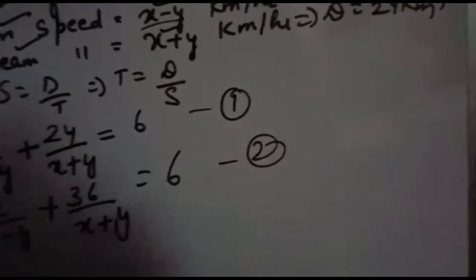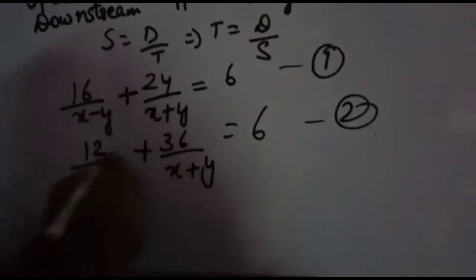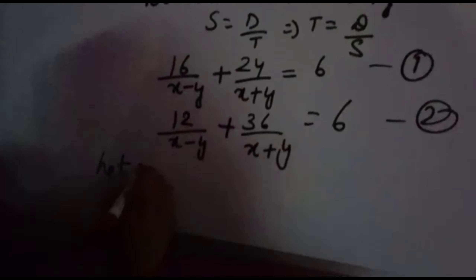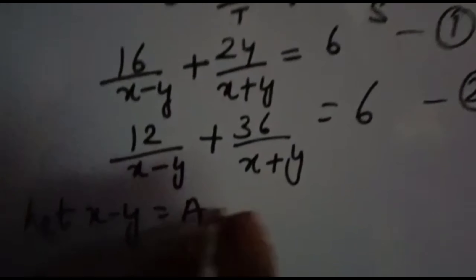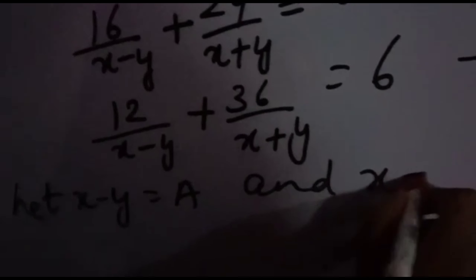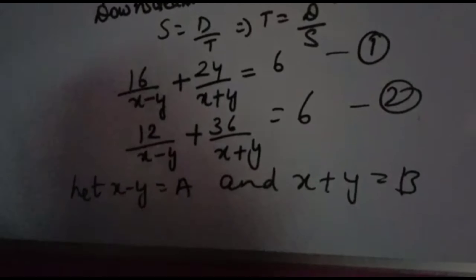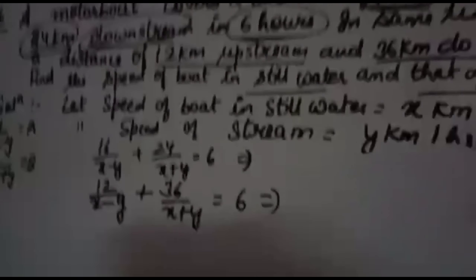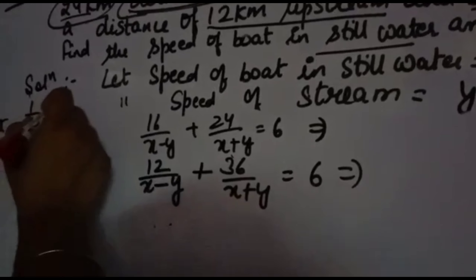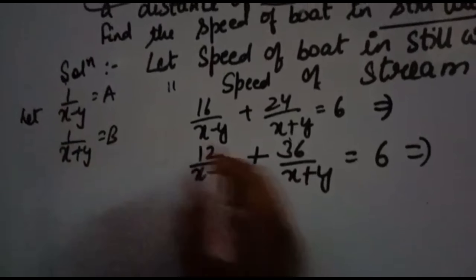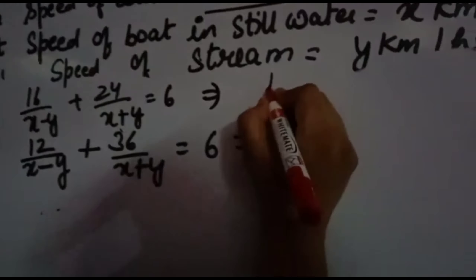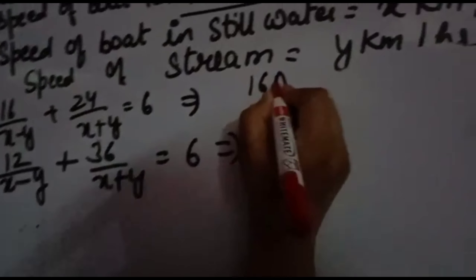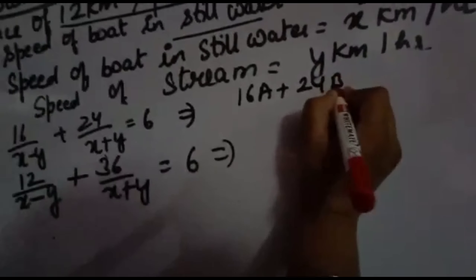Now substitute: let x minus y equal to a and x plus y equal to b in both equations. Then 1 over (x minus y) becomes a and 1 over (x plus y) becomes b. You get: 16a plus 24b equals 6 as equation 1, and 12a plus 36b equals 6 as equation 2.